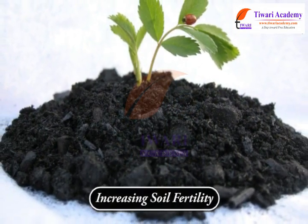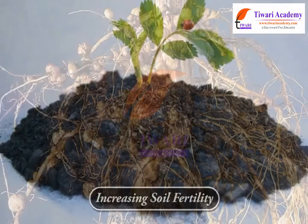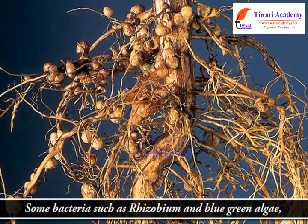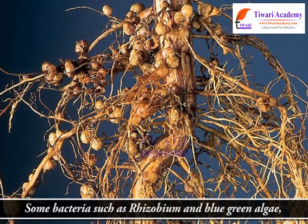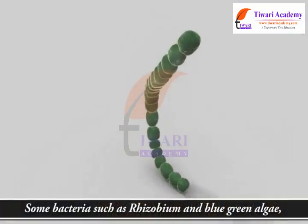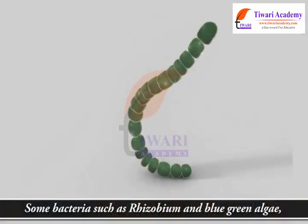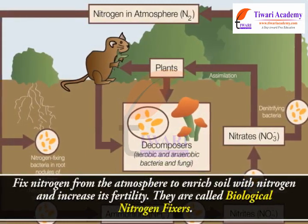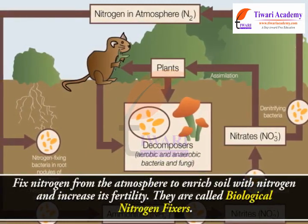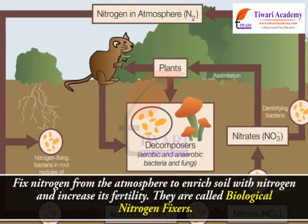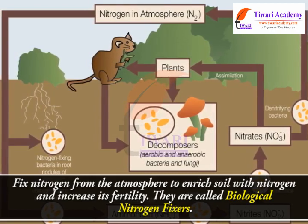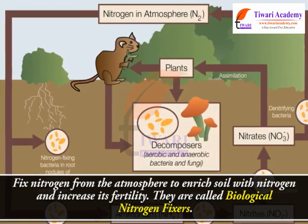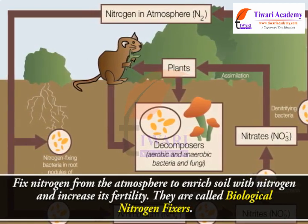Some bacteria such as Rhizobium and blue-green algae fix nitrogen from the atmosphere to enrich the soil with nitrogen and increase its fertility. They are called biological nitrogen fixers.